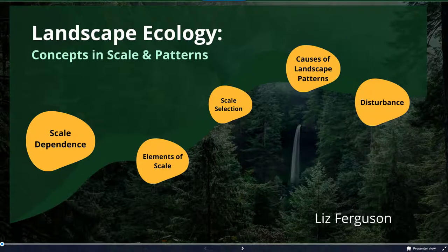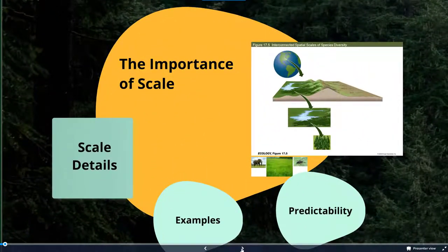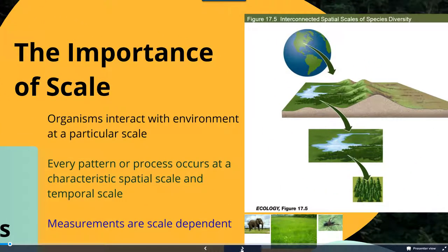Thanks for joining me today for a look at concepts in scale and patterns in landscape ecology. We know that there's an important element of scale and a dependence on scale in ecology. Organisms tend to interact with the environment at a particular scale, and every pattern or process occurs at a characteristic spatial scale and temporal scale.